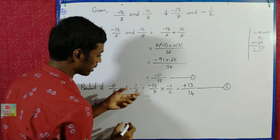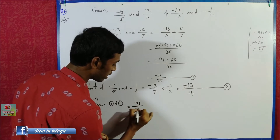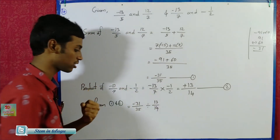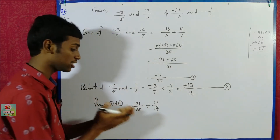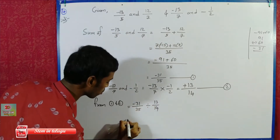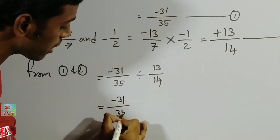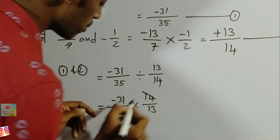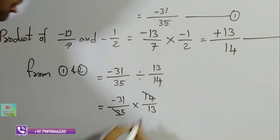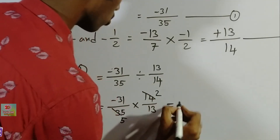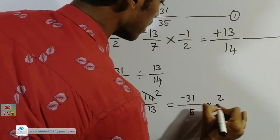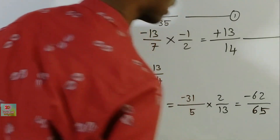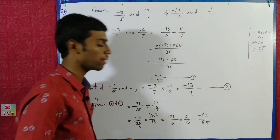From equations 1 and 2, we divide: minus 31 by 35 divided by 13 by 14. We multiply minus 31 by 14 over 35 by 13. 14 and 35 cancel giving a factor of 5 and 7, so we get minus 62 by 65. The final answer is minus 62 by 65. Thank you so much.